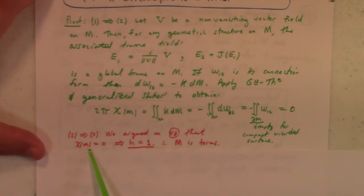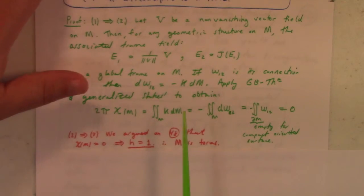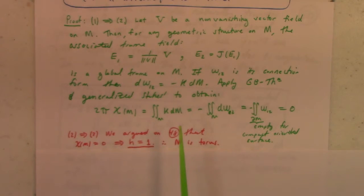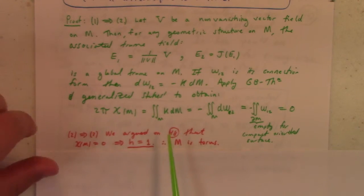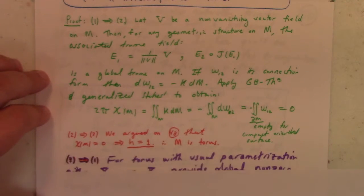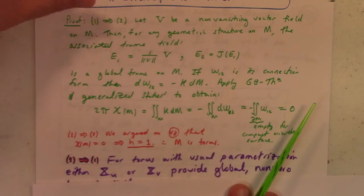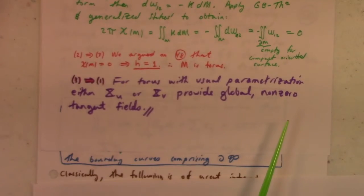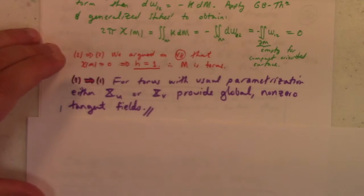To get two implies three, we already argued that if the Euler characteristic was zero, then h equals one, which we said at the start of this lecture. To get three implies one, for a torus with the usual parameterization, the partial velocities provide global nonzero tangent fields.